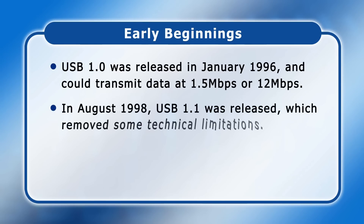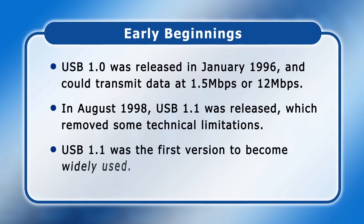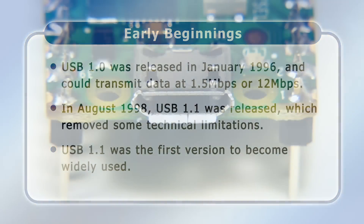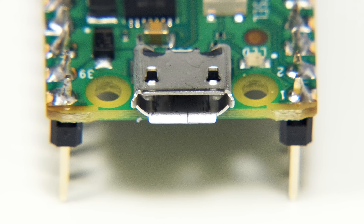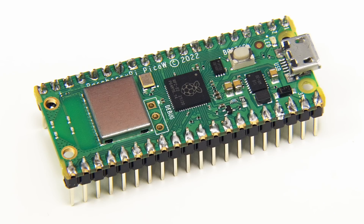In August 1998 there was an update to USB 1.1, which worked at the same speeds but removed some technical limitations. It was therefore USB 1.1 that was the first version to become widely used, and indeed today some new USB 1.1 hardware is still sold. For example, there is a USB 1.1 port on the Raspberry Pi Pico W microcontroller that was released in 2022.